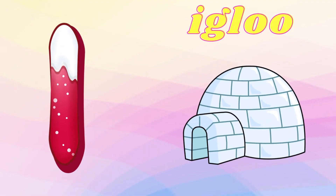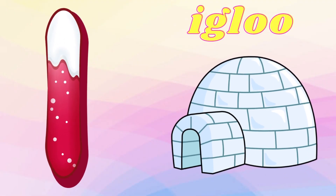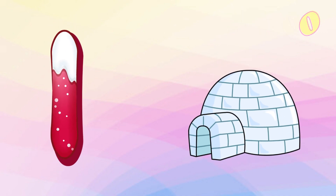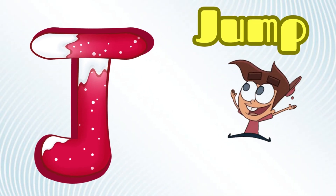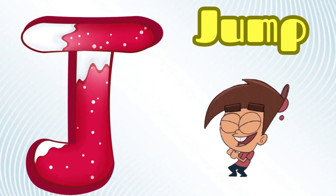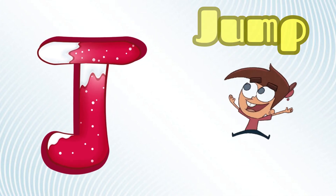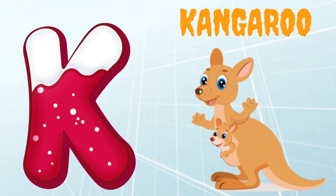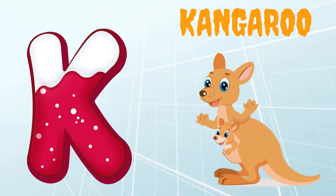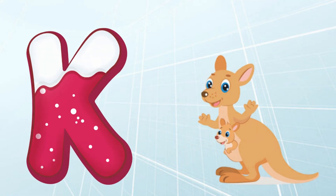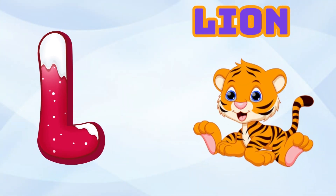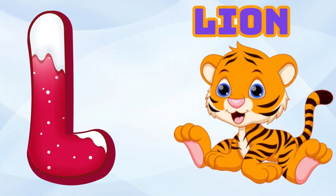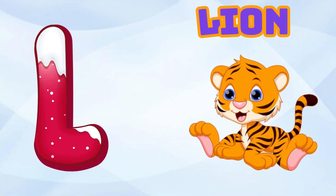I is for Igloo, I-I-Igloo. J is for Jump, J-J-Jump. K is for Kangaroo, K-K-Kangaroo. L is for Lion, L-L-Lion.